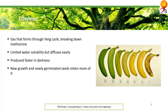Ethylene affects cell growth and cell shape when a growing shoot hits an obstacle while underground. Ethylene production greatly increases, preventing cell elongation and causing the stem to swell. The resulting thicker stem can exert more pressure against the object blocking its path. If the shoot does not reach the surface and the ethylene stimulus becomes prolonged, it affects the stem's natural geotropic response — which is to grow upright — allowing it to grow around the object.